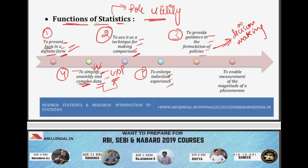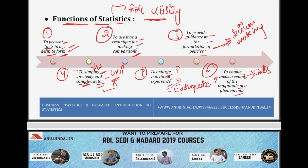After that, to enlarge individual experience — to understand anything you are experiencing, understanding its statistics is very important. After that, to enable measurement of the magnitude of a phenomenon. To understand any situation, phenomenon, or activity, it is essential that we can measure it well, and for measurement we use statistics. For example, if an earthquake occurs — as recently happened in Pakistan and Northern India — to understand the severity and how destructive it was, we need to measure it. Earthquakes are measured on the Richter scale. You can see how even a natural phenomenon like an earthquake can be measured with the help of statistics. Those were the functions of statistics.